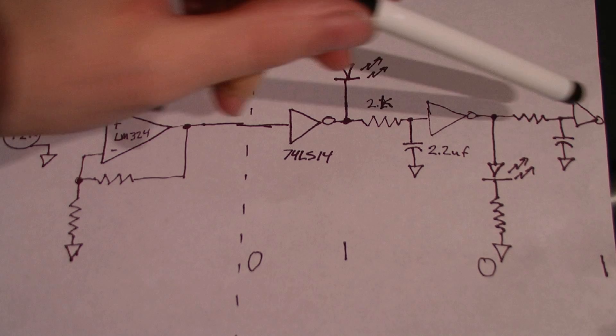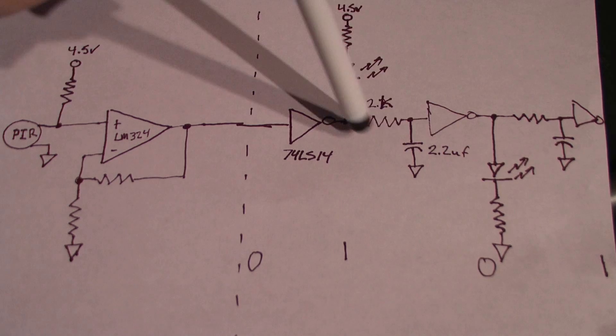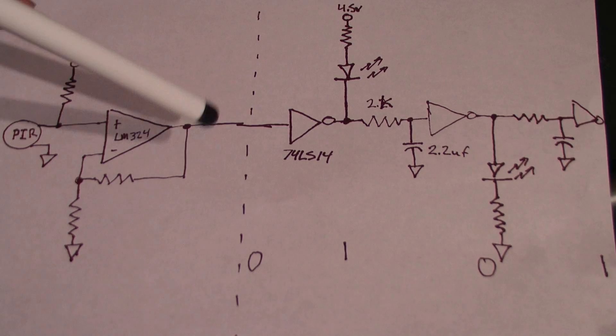The magic for the dress starts with this delay chain that I made up, Schmitt trigger inverters, resistor capacitor delay elements, and LEDs between each stage.